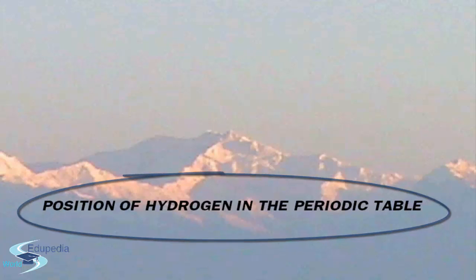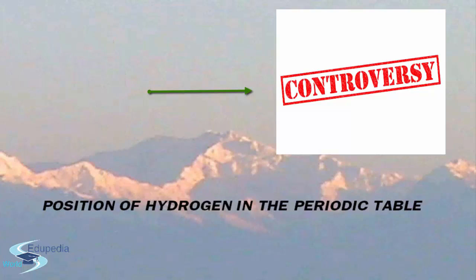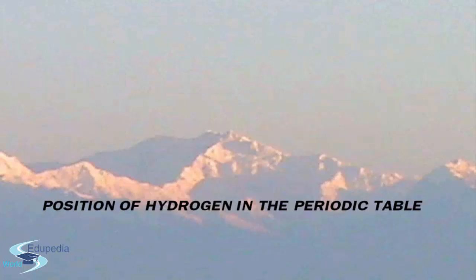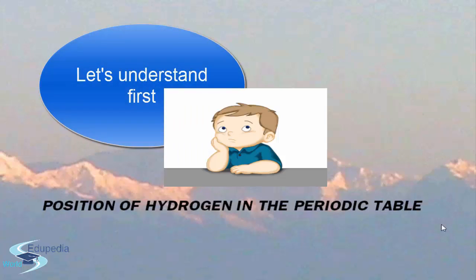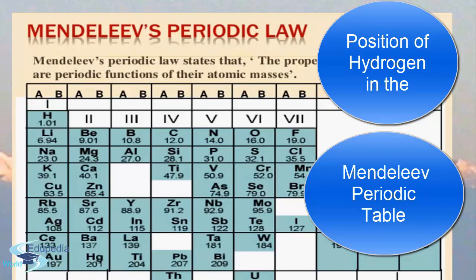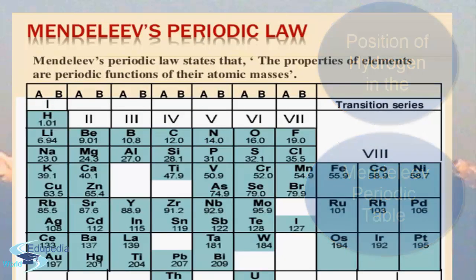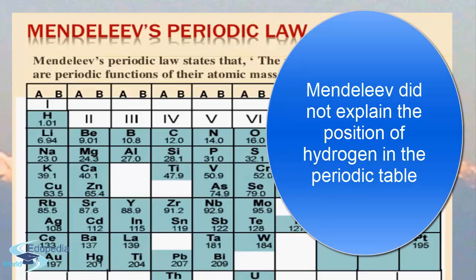The position of hydrogen in the periodic table has always been a matter of controversy and debate. To solve the controversy, let's first understand the position of hydrogen in the Mendeleev periodic table. A basic limitation of the Mendeleev periodic table is that Mendeleev did not explain the position of hydrogen in the periodic table.